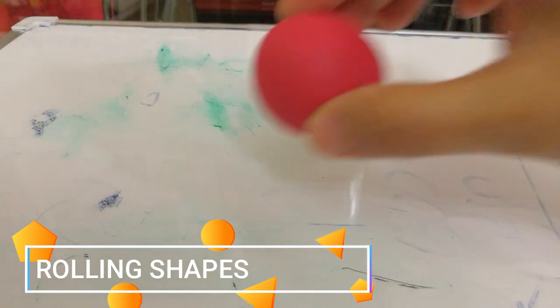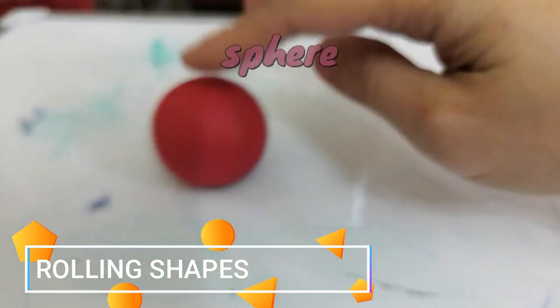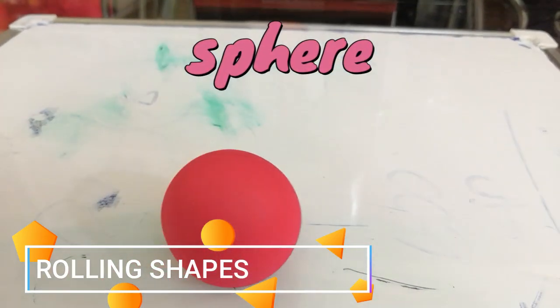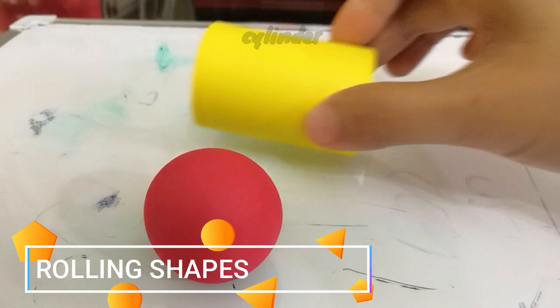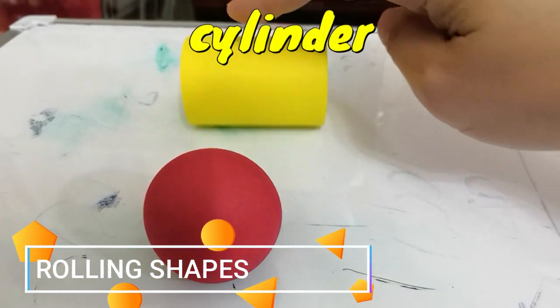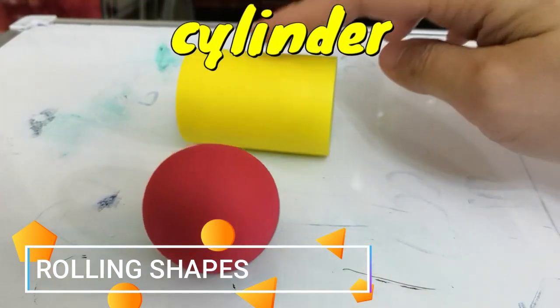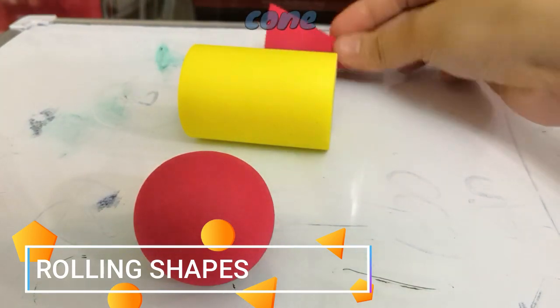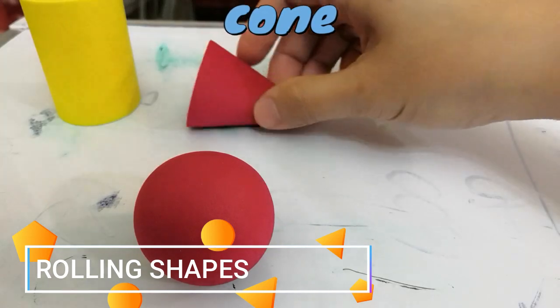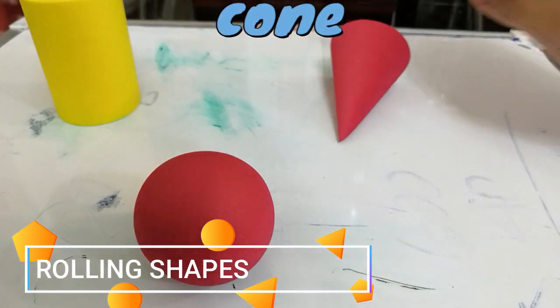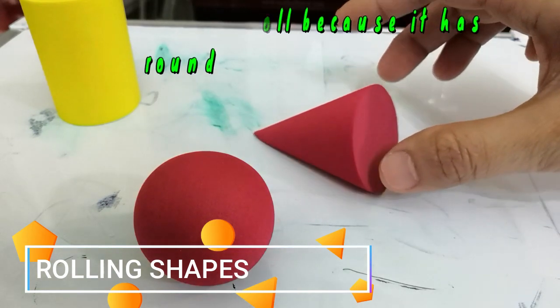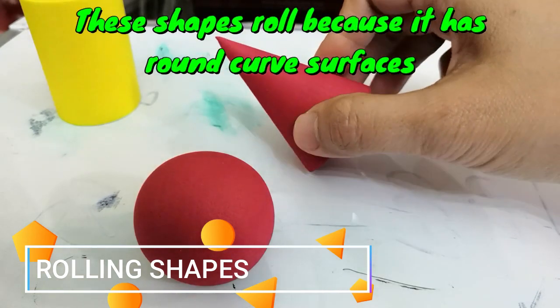These are the shapes that can roll: sphere, cylinder, and the cone. Because they have round, curved surfaces.